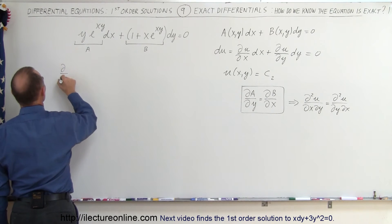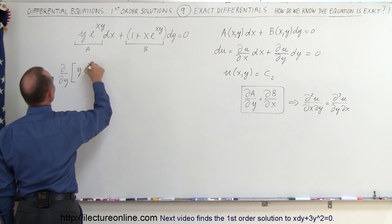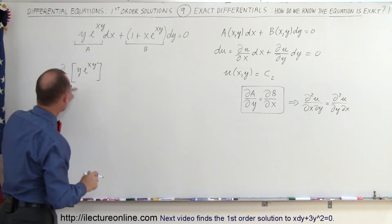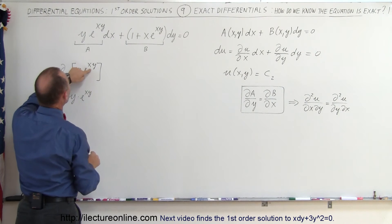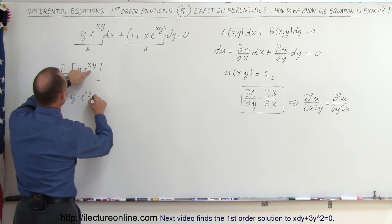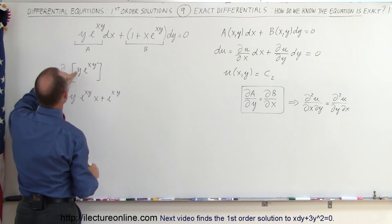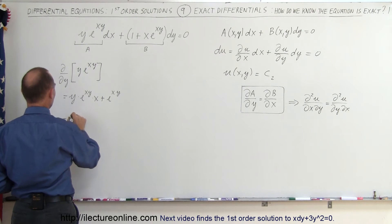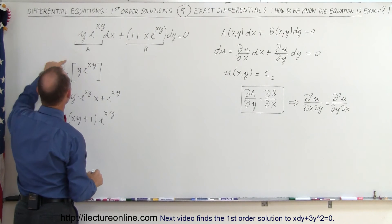So we're going to take the partial with respect to y of the quantity y·e^(xy). This is a product, so we use the product rule: it's the first times the derivative of the second, which is e^(xy) times the derivative of the exponent with respect to y, giving us x, plus the second, which is e^(xy), times the derivative of y with respect to y, which is 1. Simplifying, this equals (xy + 1)·e^(xy). So that is equal to the partial of a with respect to y.